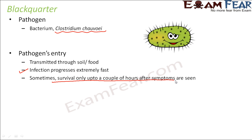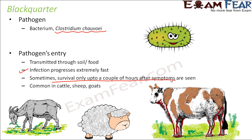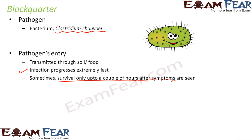Treatment for black quarter is very difficult because as soon as the animal is infected, the infection spreads throughout the body almost immediately and becomes fatal, leading to death. There is not enough time for treatment. Black quarter is common in cattle, sheep, and goats.